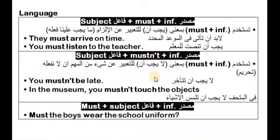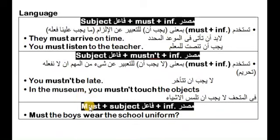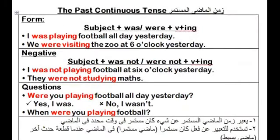Must تستخدم للتعبير عن شيء مهم أن لا نفعله — تحريم. You mustn't be late — لا يجب أن تتأخر. In the museum, you mustn't touch the objects — في المتحف لا يجب أن تلمس الأشياء. في السؤال بنقدم Must على الفاعل: Must + Subject + Infinitive. Must the boys wear the school uniform?